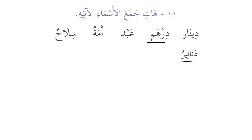We have to provide the plural of the following nouns. 'Dinar' — the plural will be 'dananir' — it follows the pattern of 'fanafiil.' These are currencies used. 'Abdun' — the plural is 'ibadun' — as we recite in the tashahhud: 'as-salamu alayna wa ala ibadillahi al-salihin.' Then 'amatun' — used for the female slave — and its plural is 'ima'un.'